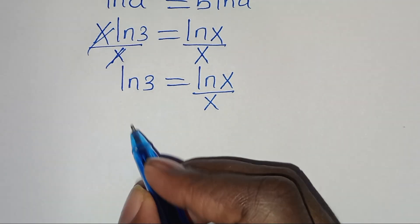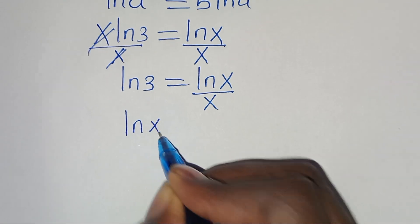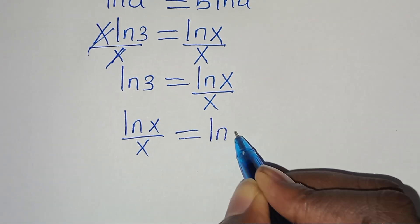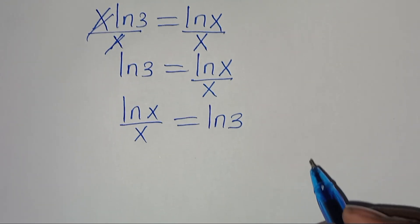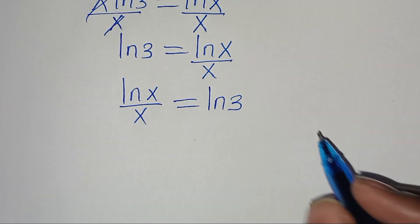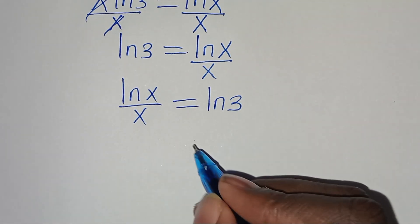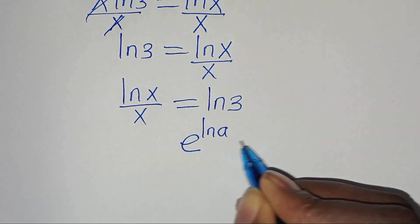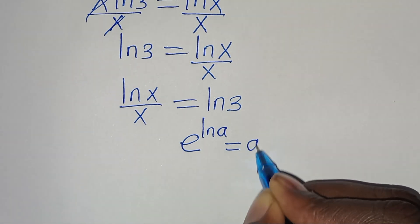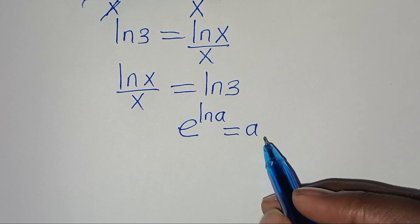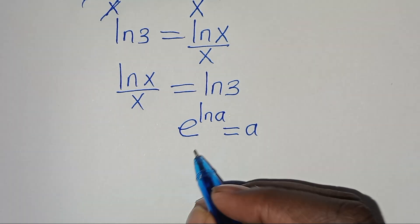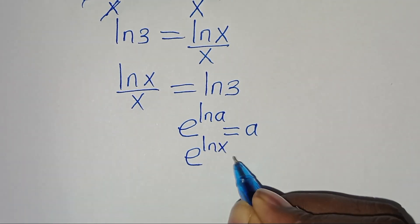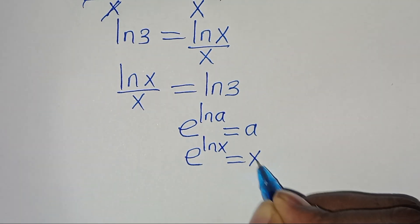Now we have ln(x)/x equal to ln(3). We also recall that e to the power of ln(a) equals a, so we can express e to the power of ln(x) as simply x.